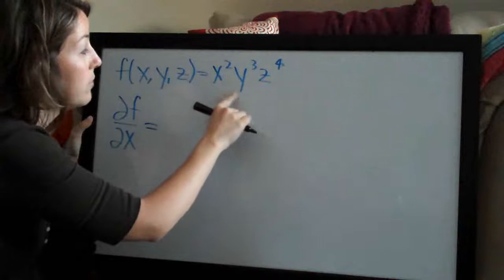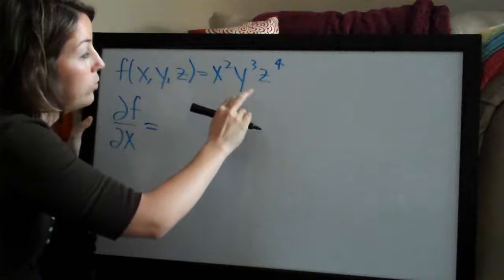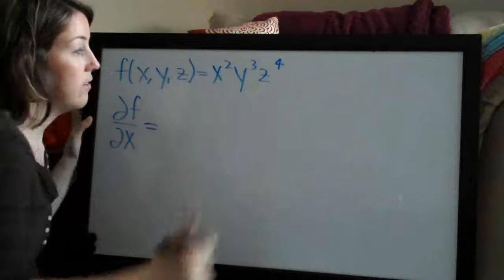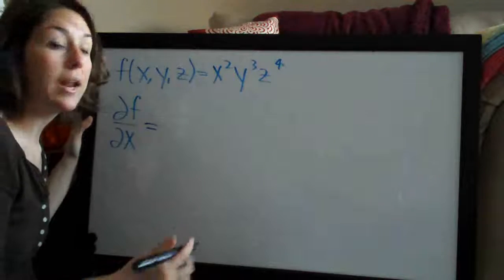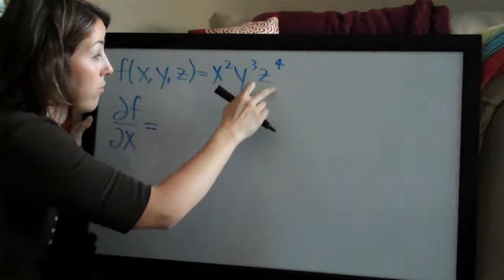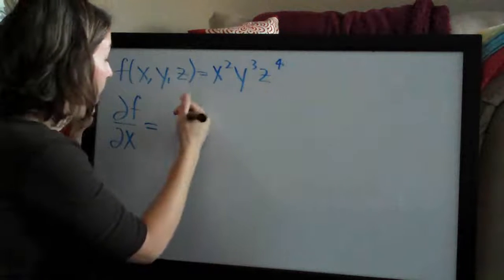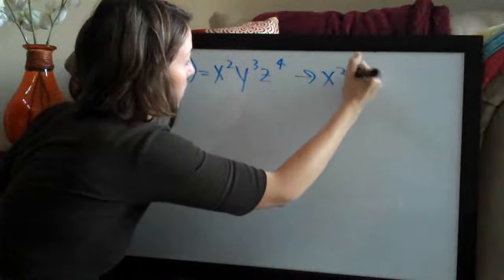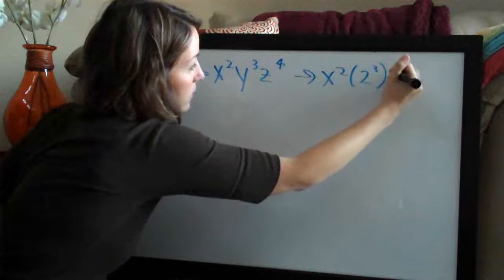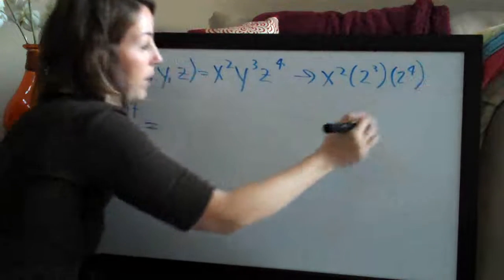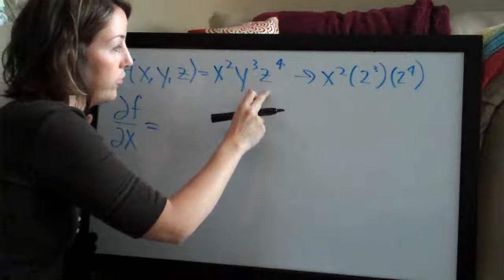For example, we're talking about holding y and z constant as if they were a constant number like 2 or 3. So let's go ahead and put 2 in for y and z. If we did, we would have x squared times 2 cubed times 2 to the fourth, because we plugged in 2 for y and for z.